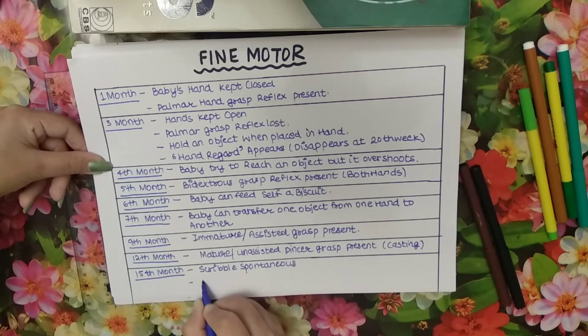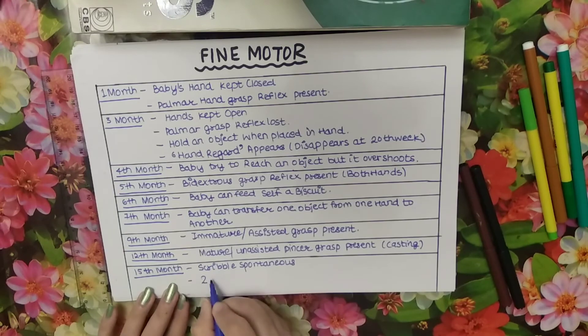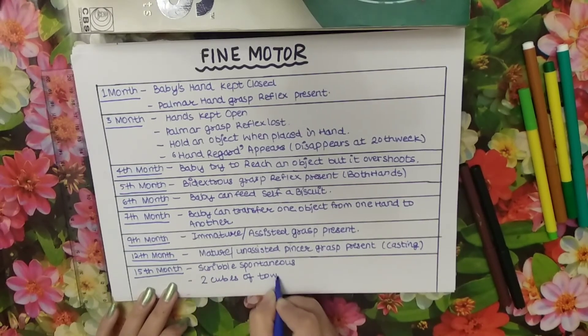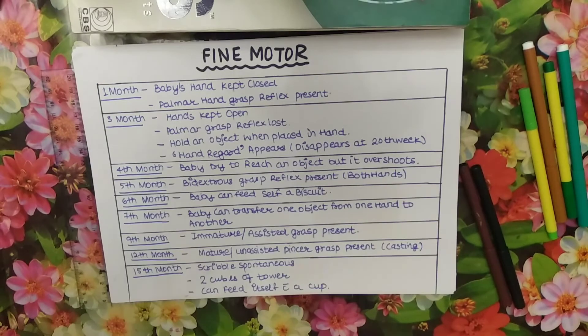Twelve months baby can make two cubes of tower and can feed itself with a cup.